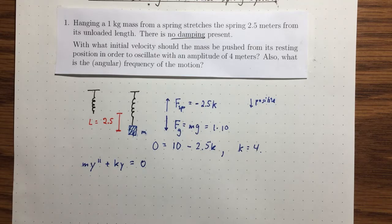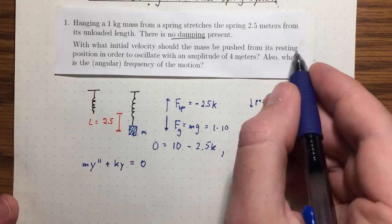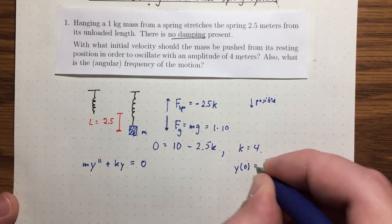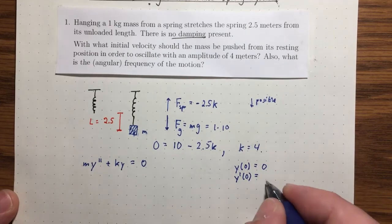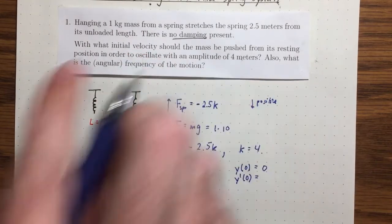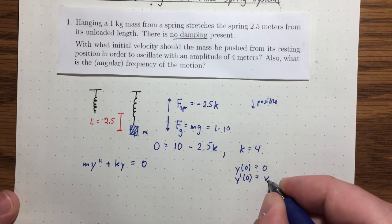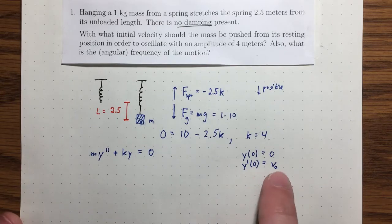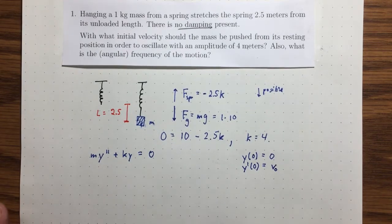We need to find what initial velocity the mass should be pushed from its resting position. Being pushed from its resting position tells us it's at rest initially, so y(0)=0. For y'(0), well, that's exactly what we want to find — that's the initial velocity. I'll call it v₀. This is often a useful idea: if we're trying to find something and we're not sure how to proceed, just give it a name and then try to solve the initial value problem.